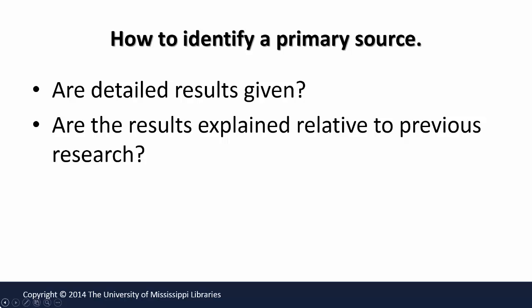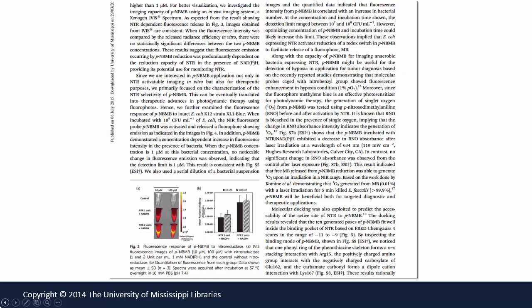Are detailed results given in the article? Are the results explained relative to previous research? In this section of the article, the authors explain the results. They provide data in the text as well as information in a graphic form. Note also the relationship that the authors draw to other research previously done by other scientists.